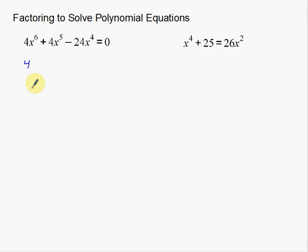So that actually tells me that I'm going to factor out a 4 first, and also I see all these x's here. I see that every single one of them has at least x to the 4th. And so what I'm going to do is I'm first going to factor out that common factor. I'm going to factor out a 4 and factor out an x to the 4th. So that's going to leave me x squared plus x minus 6 equals 0.